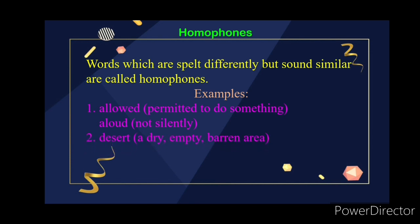Let's see one more example. 'Desert', D-E-S-E-R-T — it is a dry, empty, barren area. Whereas 'dessert', D-E-S-S-E-R-T — it is a sweet dish served at the end of a meal. As you can see, the words are spelt differently but their sounds are the same.